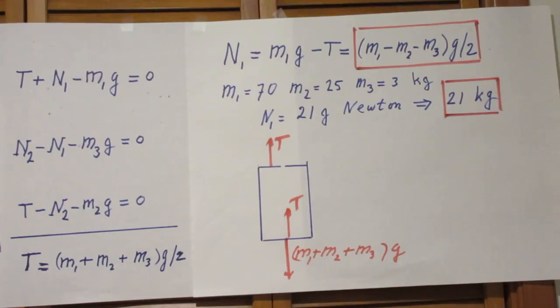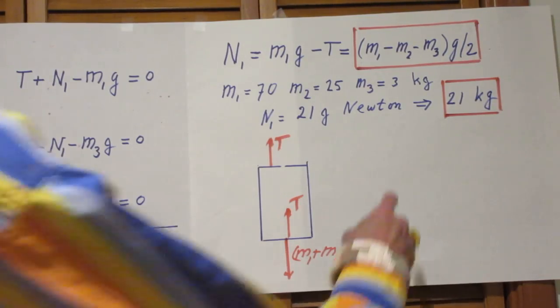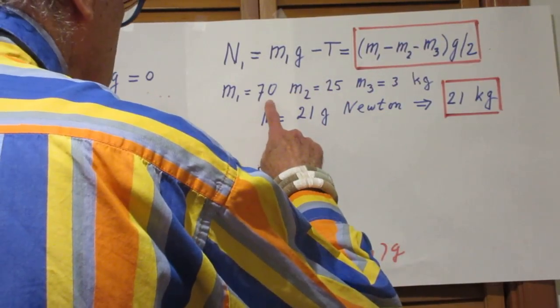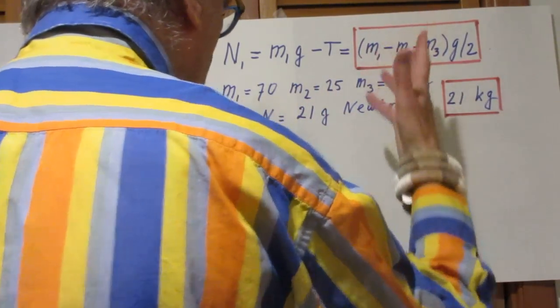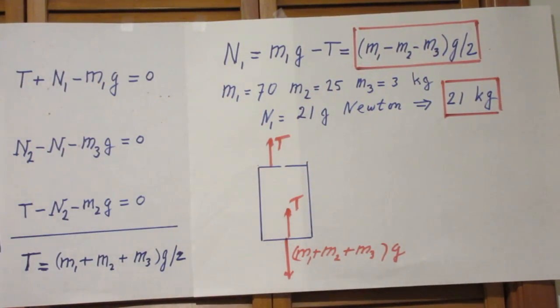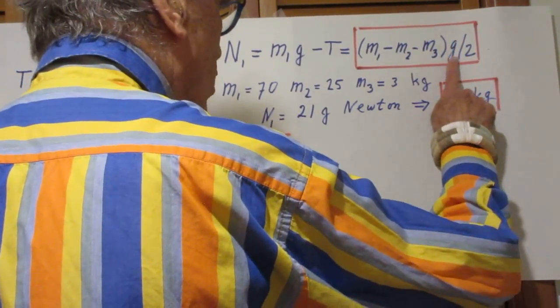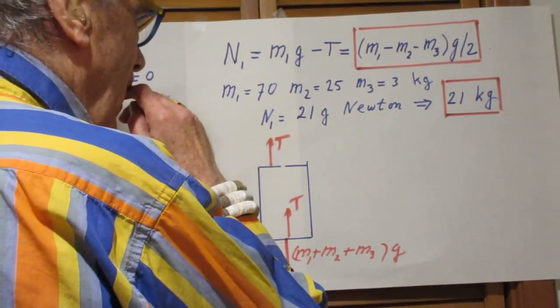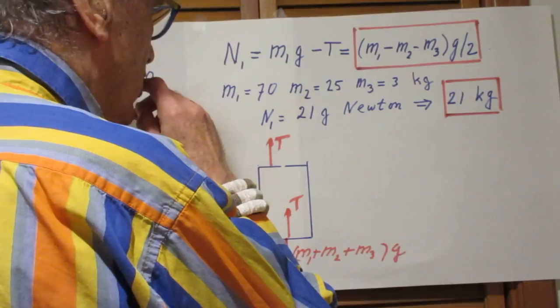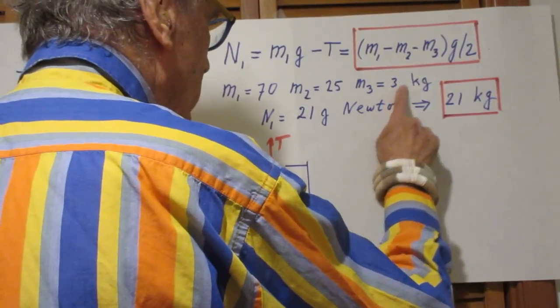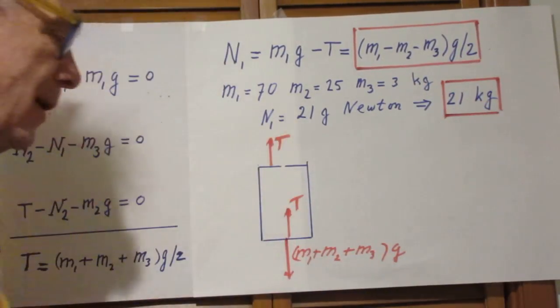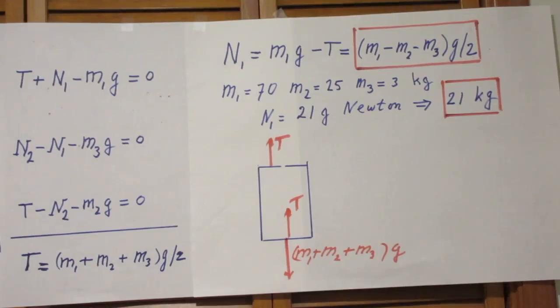But our scale is calibrated in kilograms. And so when we substitute for m1, 70, and for m2, 25, and for m3, 3, which was just a numerical example that I asked you to evaluate, then we can forget about the g because we're going to work in kilograms. And so the scale will indicate 70 minus 25 minus 3 divided by 2, and that is 21 kilograms. So that's the answer, the second answer that I wanted from you.